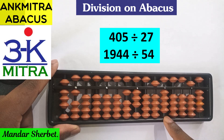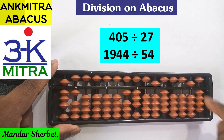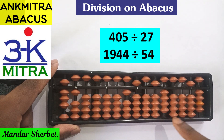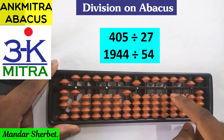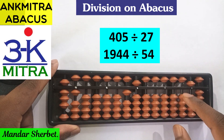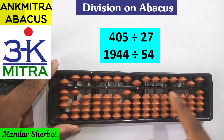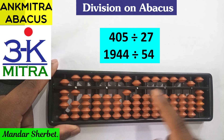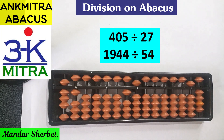After the first units-place step, we still have 54 remaining on the question set. Since 54 is exactly two times 27, we can subtract it. So we add 2 on the same units-place rod of the answer set: plus 5 minus 3, then subtract 54. The question set is completely subtracted with no remainder. The final answer for 405 divided by 27 is 15 — 405 is an exact multiple of 27.